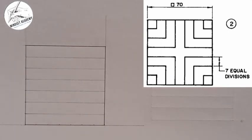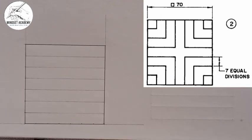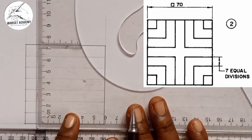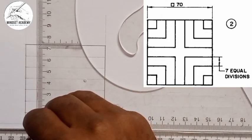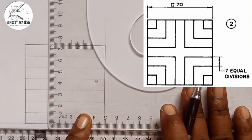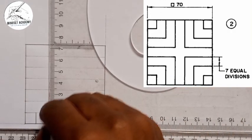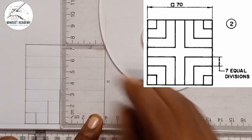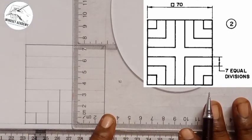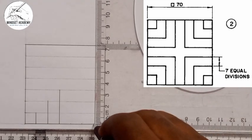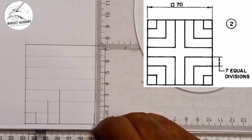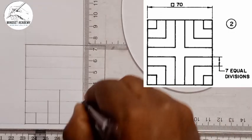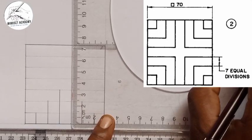I'll take my compass and T-square, then place my set square on it and move it to the first point to draw the first horizontal line. I'll go to the next point and draw the next line, then the next point, the next line, and so on across the figure. I'll come to the other side and do the same thing — first point, first line; second point, second line; third point, third line — working through all the division points.